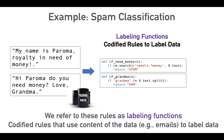You can codify your rule in any way — it doesn't just have to be a heuristic. It can use external knowledge bases, a database, or wrap existing simple models. Essentially anything that takes in data and assigns a label, even if it's noisy, can be codified as a labeling function.